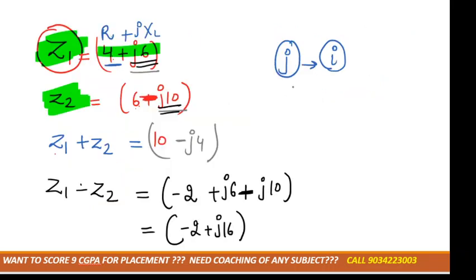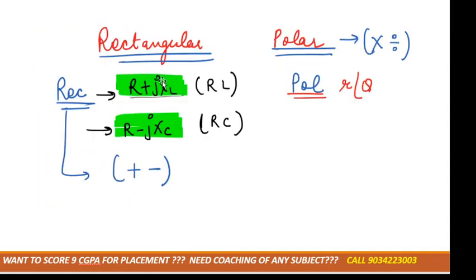But what if we want Z1 multiplied by Z2? Can we do multiplication in the rectangular form? For multiplication, we need to convert it into which form? That is in polar form.